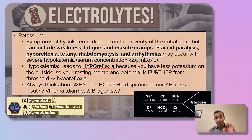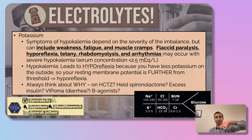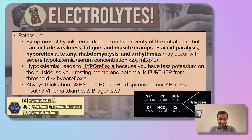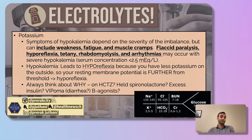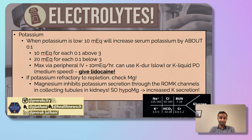When someone is hypokalemic, always think about why. It's easy to replace the potassium and temporize the patient, but think about the underlying cause. Are they being diuresed? Are they on something that causes low potassium? Is their spironolactone being held? Are they getting excess insulin? Do you think they have a VIPoma? Are they on beta agonists? All of those things can cause low potassium levels.